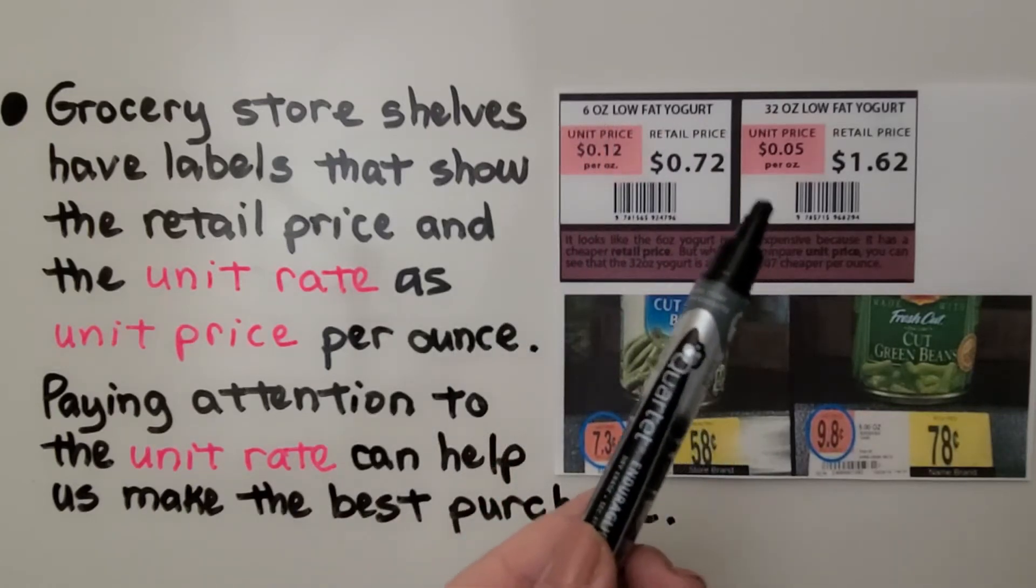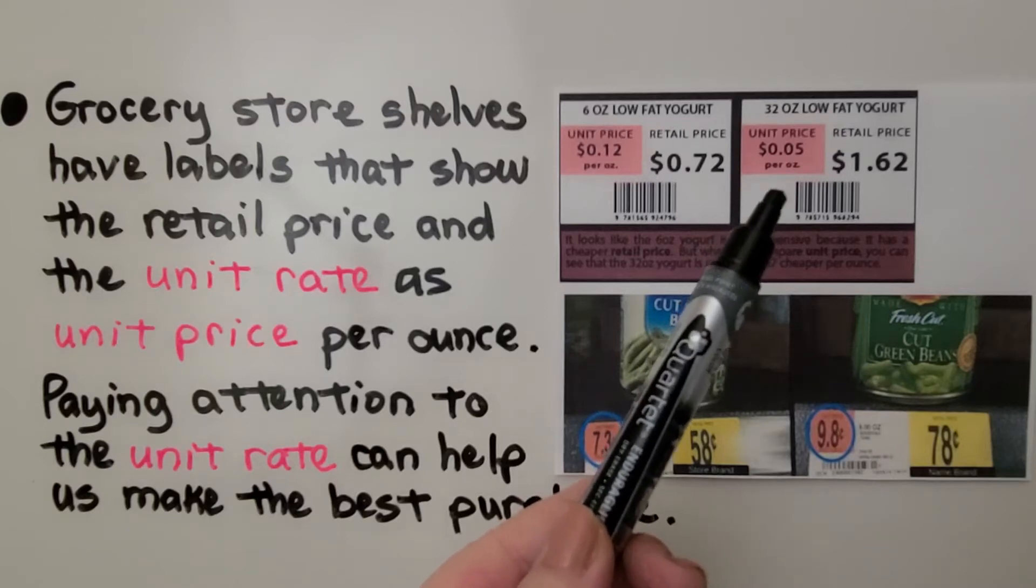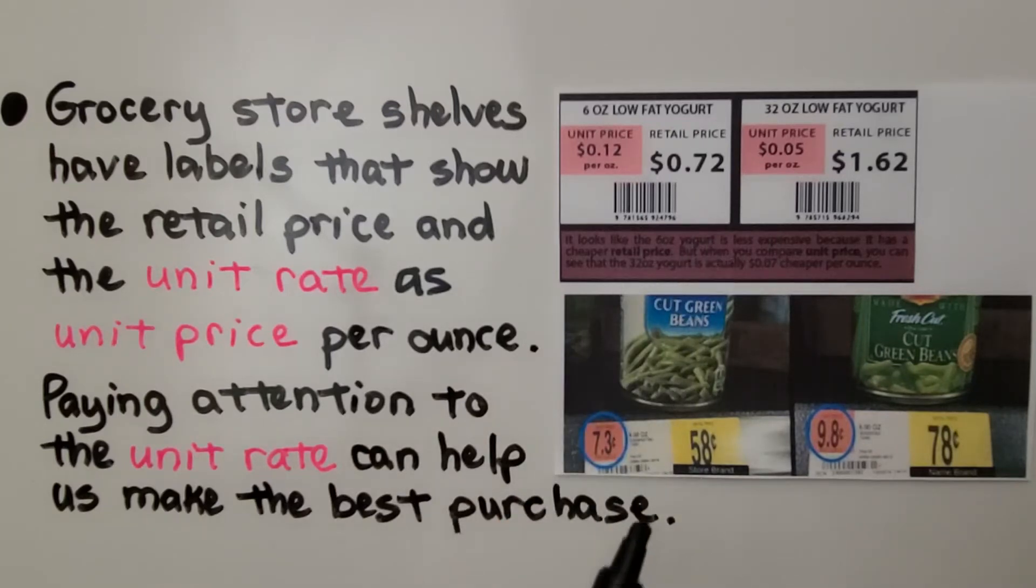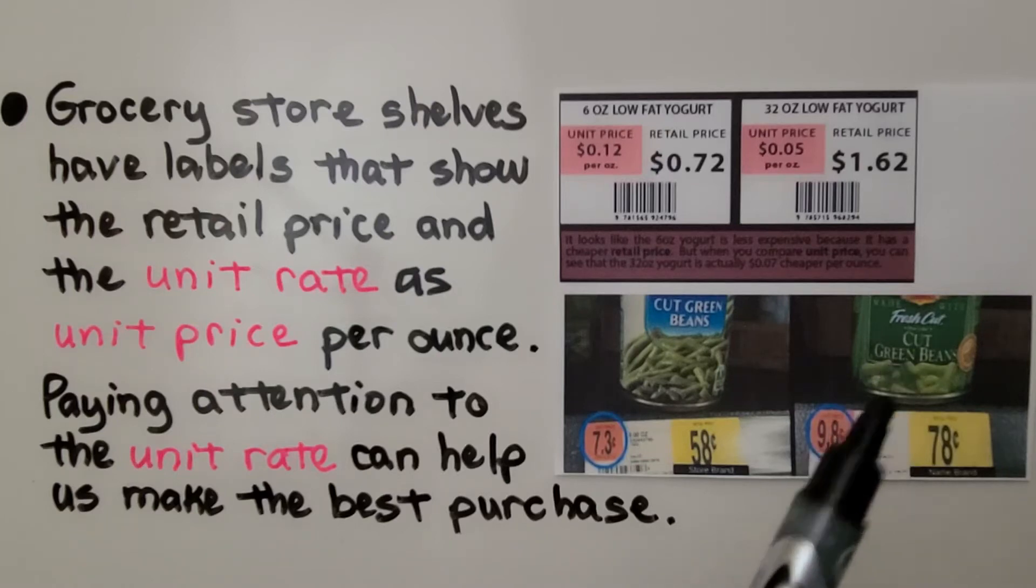So this would be the better deal because it's only 5 cents per ounce. And for these green beans, this brand is 7.3 cents per ounce, and this one's 9.8 cents per ounce. It might be because it's a name brand.